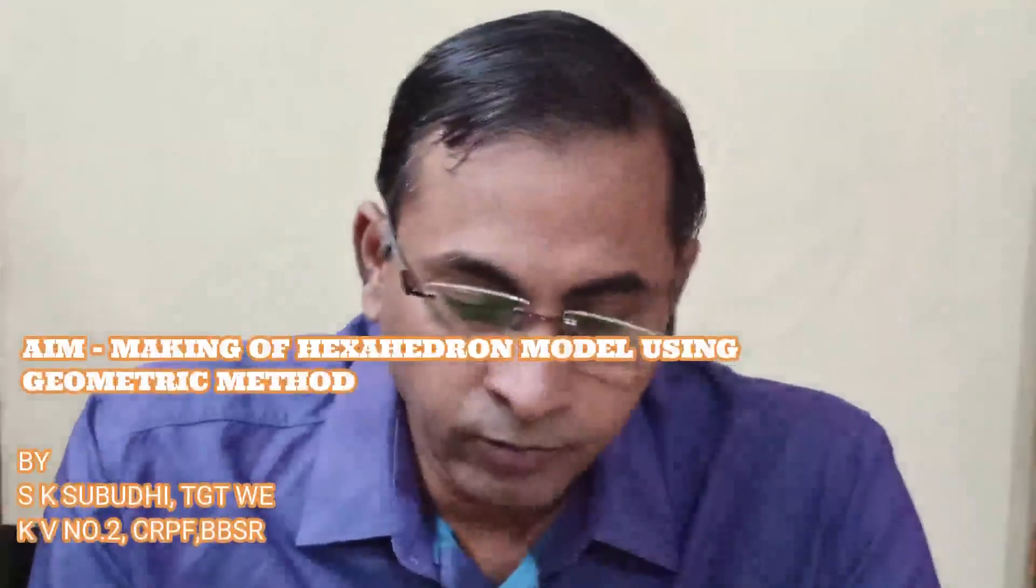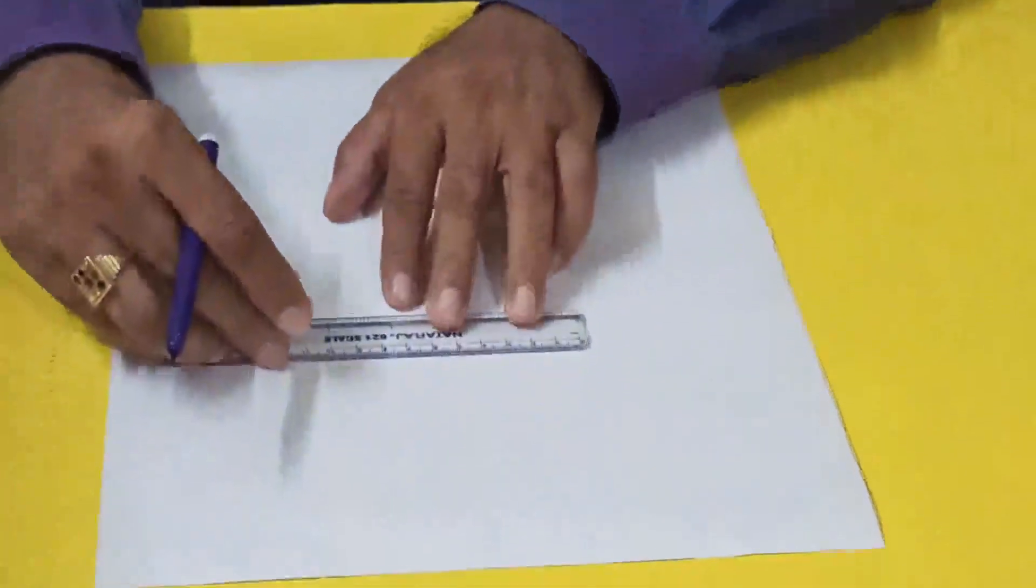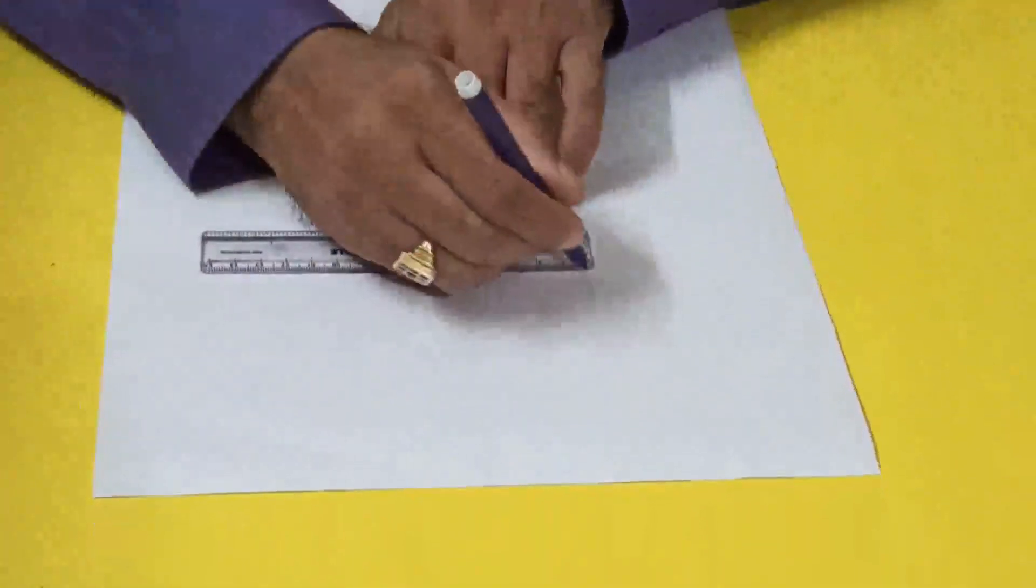Good morning students, now we will discuss how to make a hexahedron. A hexahedron is a polyhedron having six equal sides, equal triangles. I have taken five centimeters as the side. Let us start.